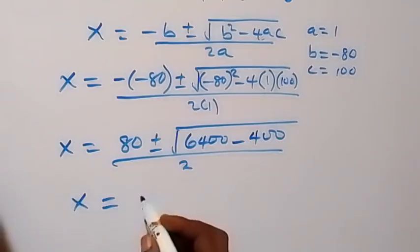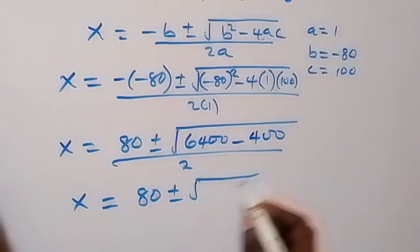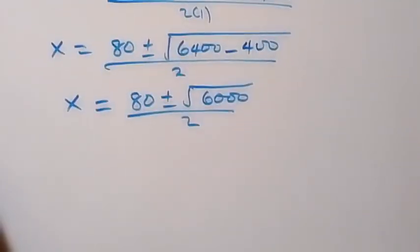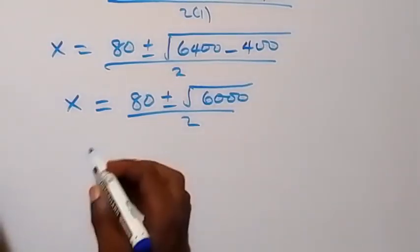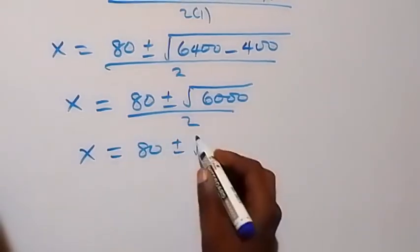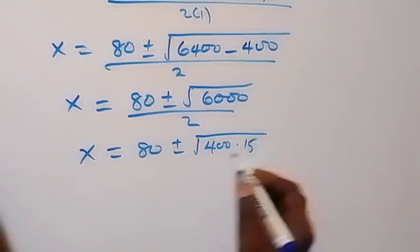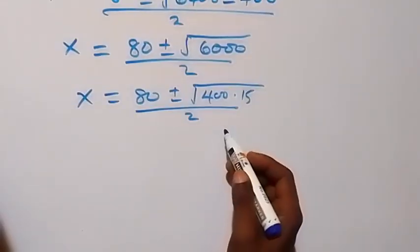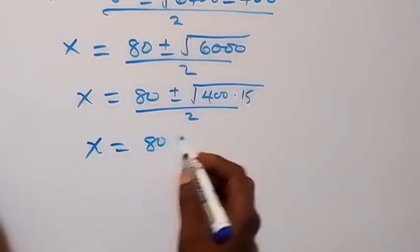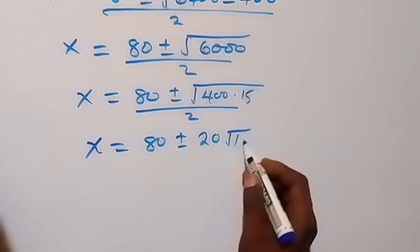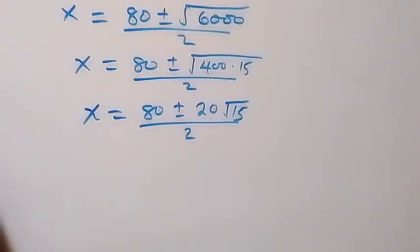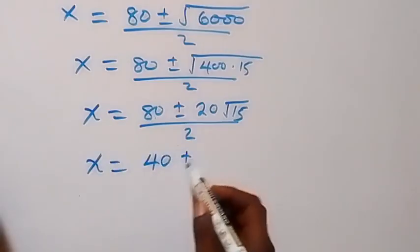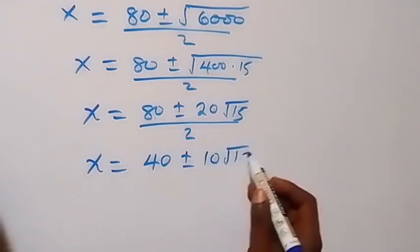So here, we have x now to be equal to 80 plus or minus square root of 6000, over 2. And 6000 here, we can write it as 400 times 15. So we have x equals to 80 plus or minus square root of 400 multiplied by 15, over 2. We have the square root of 400 as 20. So we have x equals to 80 plus or minus 20 root 15, over 2. When we divide each term by 2, x will now be equal to 40, plus or minus 10 root 15.